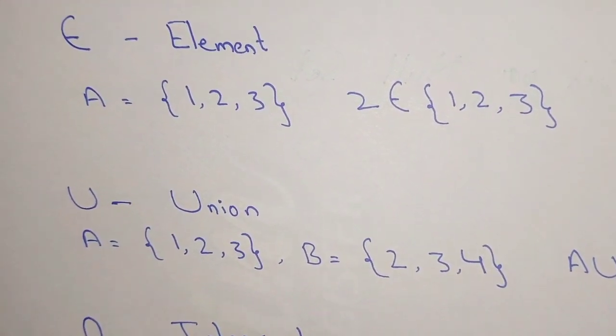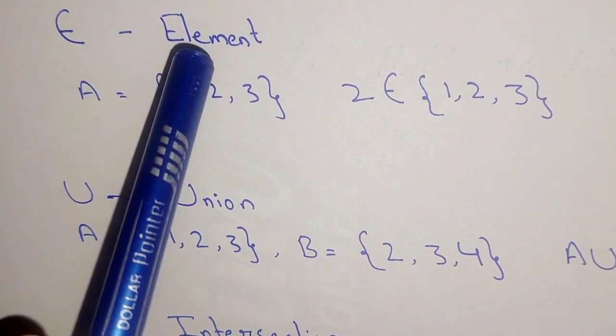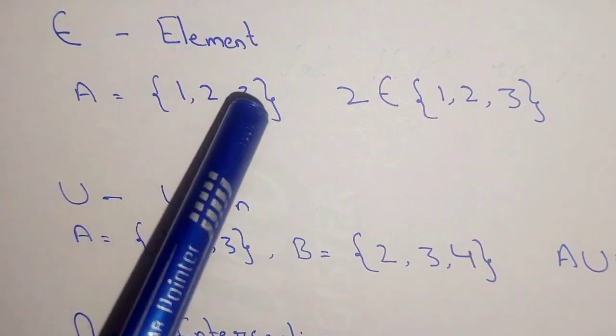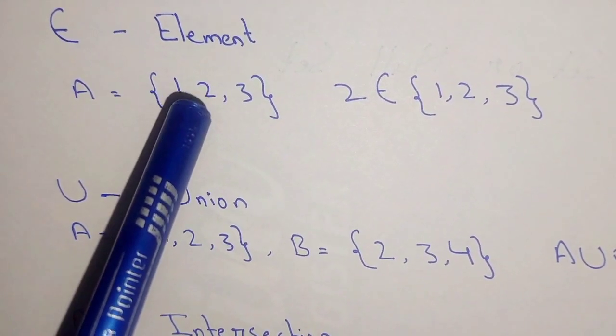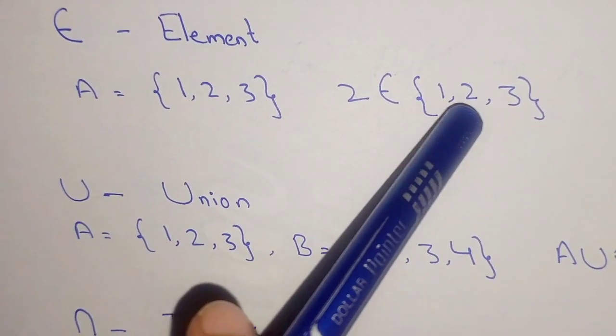The first notation is ∈, which denotes element. For example, we have a set having the elements 1, 2, and 3. Each number in this set is an element. So we can say that 2 is an element of {1, 2, 3}.